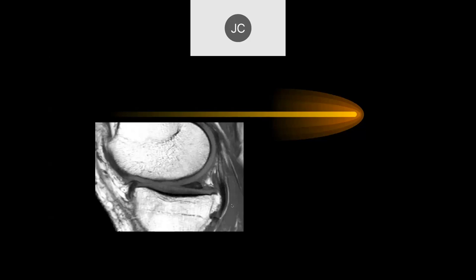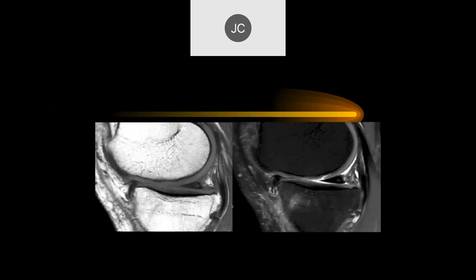This is a T1-weighted sagittal image, and this is the reason why we don't do T1 sagittal images anymore. Here's what the PD fat sat looks like — there's a cartilage defect along the weight-bearing surface of the femur. We can see a flap tear here — a little flap, so it's all unstable.